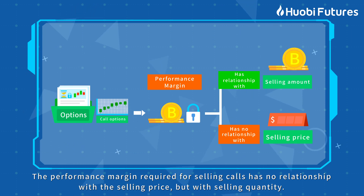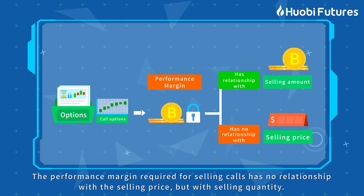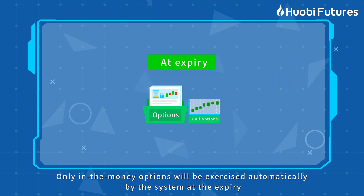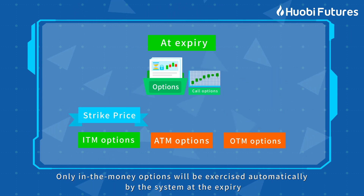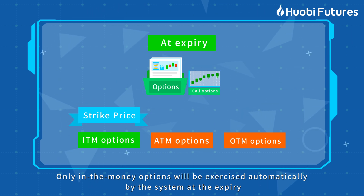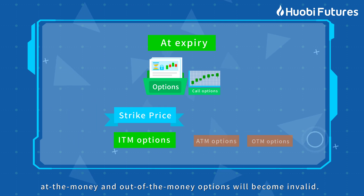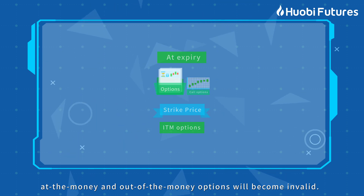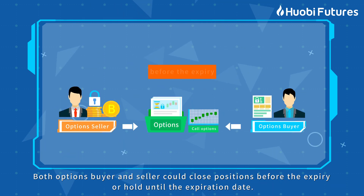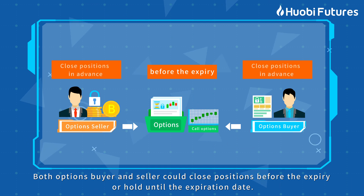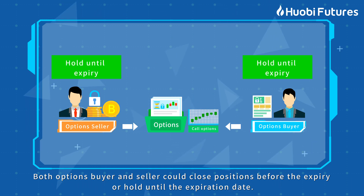The performance margin required for selling has no relationship with the selling price, but with selling quantity. Only in-the-money options will be exercised automatically by the system at expiry. At-the-money and out-of-the-money options will become invalid. Both options buyers and sellers can close positions before expiry or hold until the expiration date.